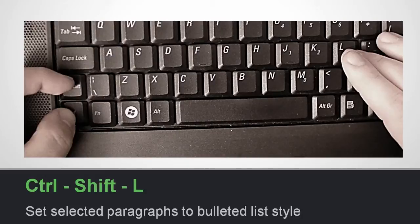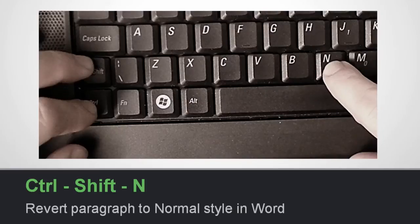For example, in Microsoft Word, if I select text and then type CTRL-SHIFT-L, it becomes bulleted. I can also use a different combination of fingers — sometimes I use my index finger and middle finger to hold down CTRL and SHIFT, and then my right hand to press the shortcut key. In this case I'm using CTRL-SHIFT-N, which sets the paragraph to normal style in Word.